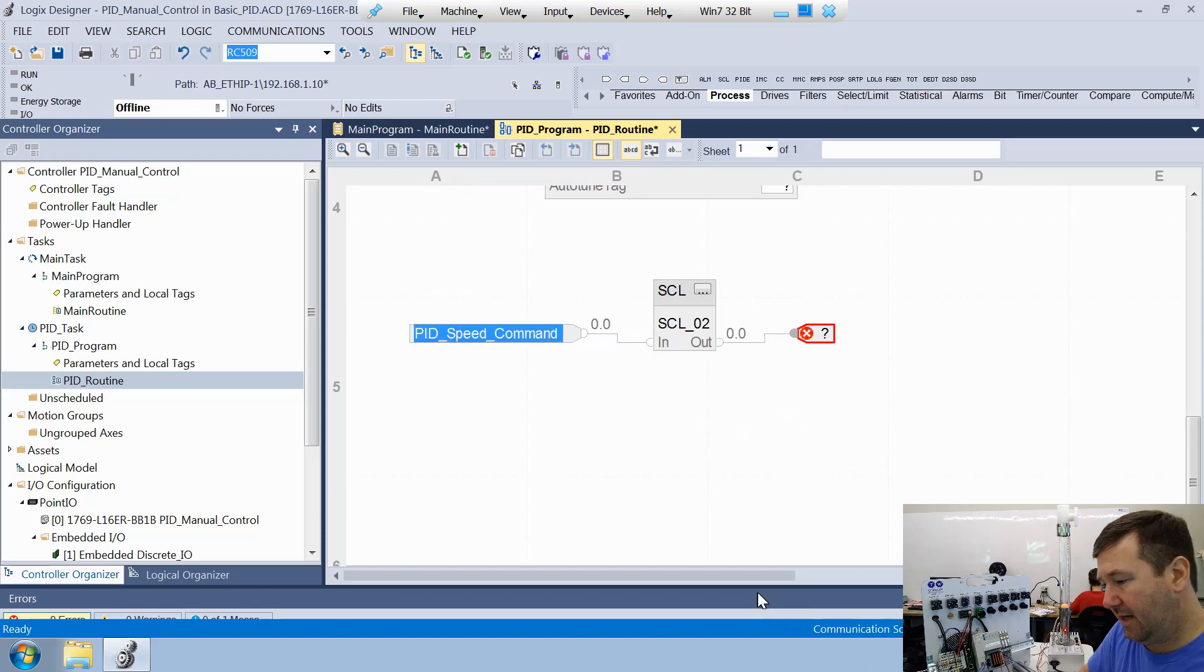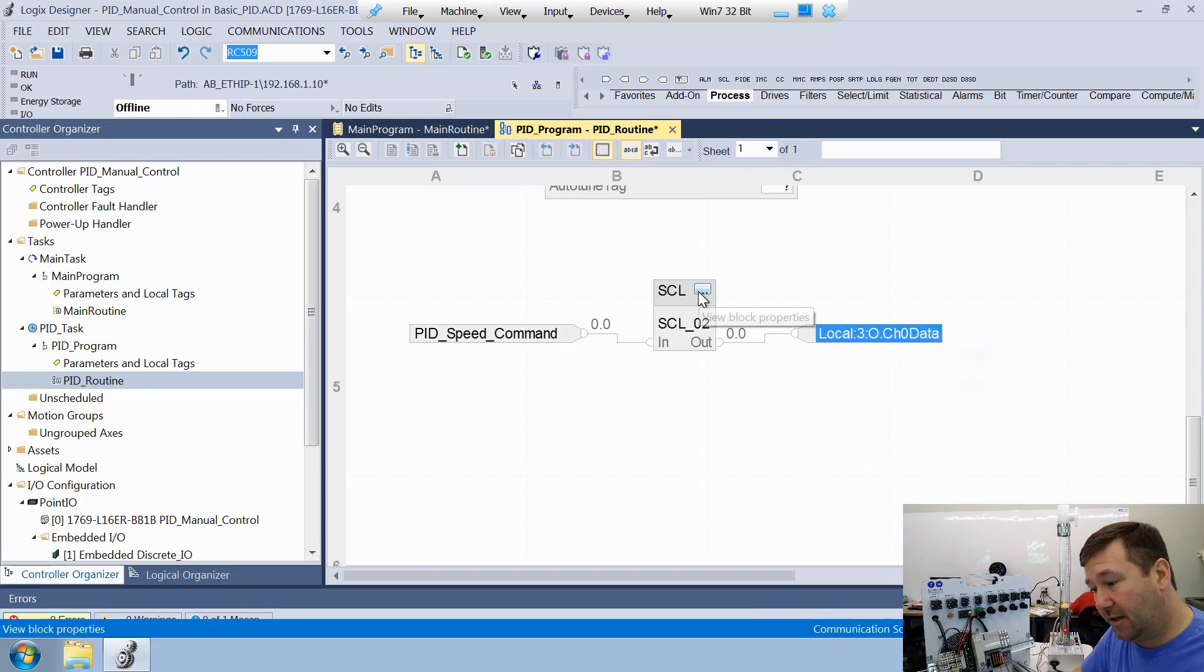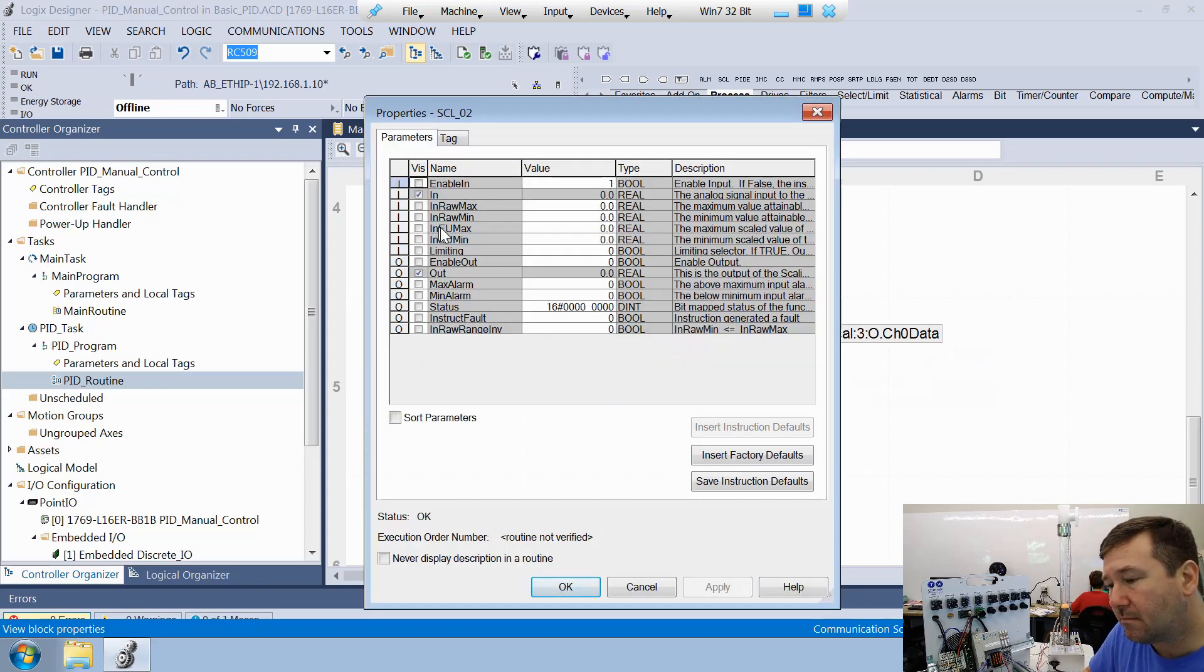So PID speed command, and then our output is going to be local colon three colon O dot channel zero data. And then we're going to need to configure this block. So we'll click the view block properties and our PID right now is set up for zero to 100%. So that's going to be our raw minimum max is zero to 100. And then our engineering units for our analog output are zero to 10,000 equals zero to 10 volts. So engineering units max will need to be changed to 10,000.